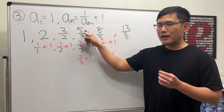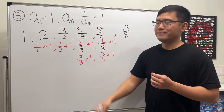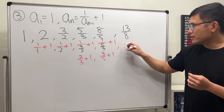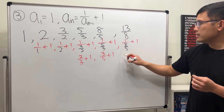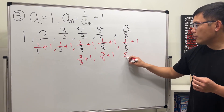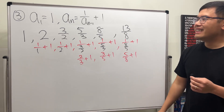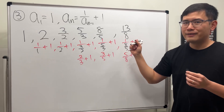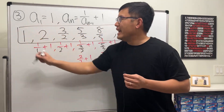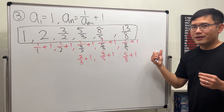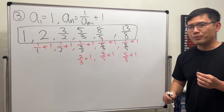If you want to verify: 1 over the previous, 5/8, and then add 1, which is plus 8/8. These numbers are actually from the Fibonacci sequence. And if you continue, you will see that these fractions are approaching the golden ratio, which is about 1.618.